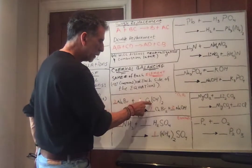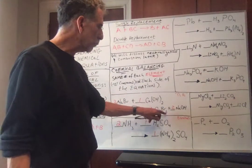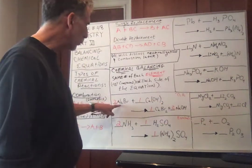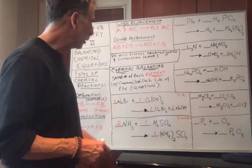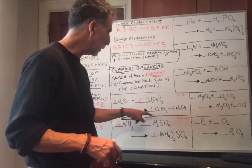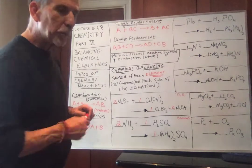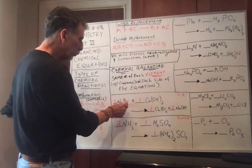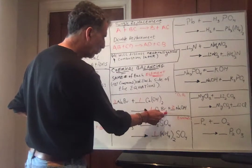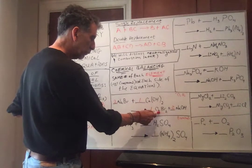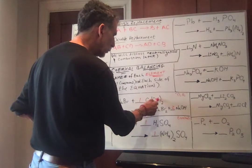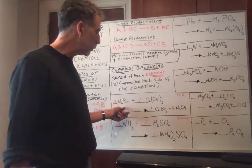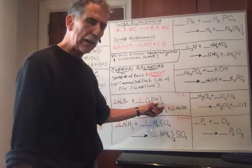Sodium bromide is mixing with calcium hydroxide. The result is calcium bromide plus NaOH, sodium hydroxide. Sodium and calcium are switching places, so we have a double replacement. Let's count: two sodiums on the left, two sodiums on the right. Two bromines — Br2 with a one in front, two bromines. One calcium, one calcium. Two hydroxides: two oxygens, two hydrogens on each side. Everything's balanced — same number of sodiums, bromines, calciums, oxygens, and hydrogens on each side.